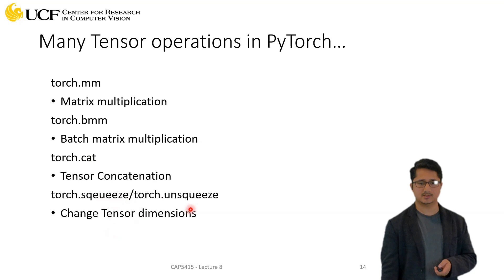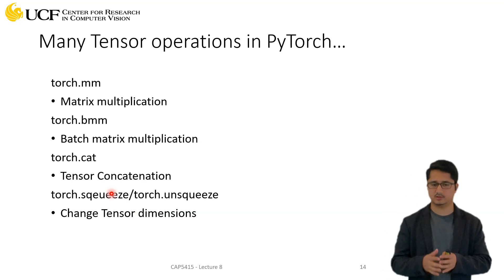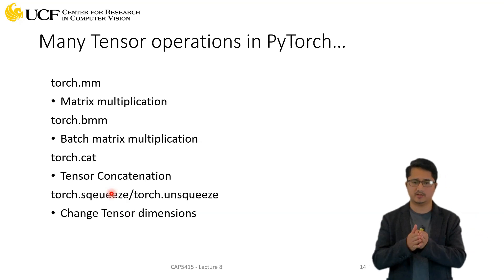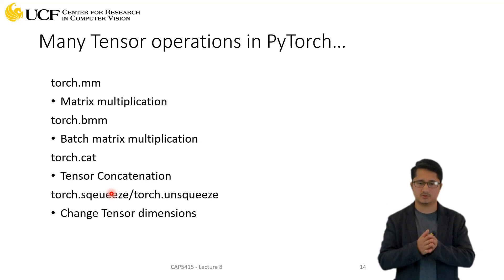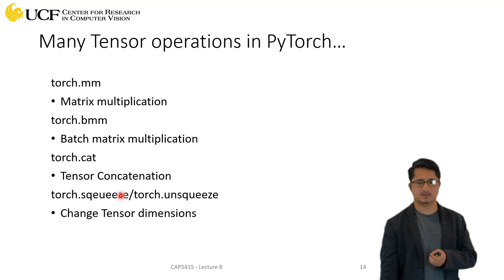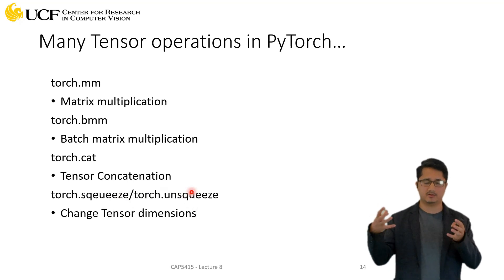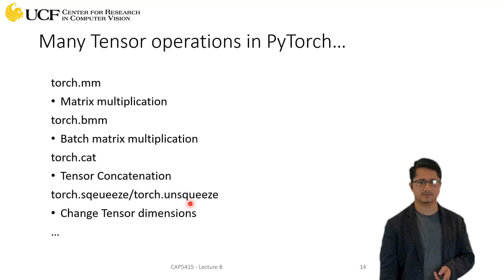Squeeze and unsqueeze are also important operations. If you have a five-dimensional matrix and want to get rid of a dimension that has only a single value, you use squeeze. If you want to expand the matrix or increase its dimensionality, you use unsqueeze.